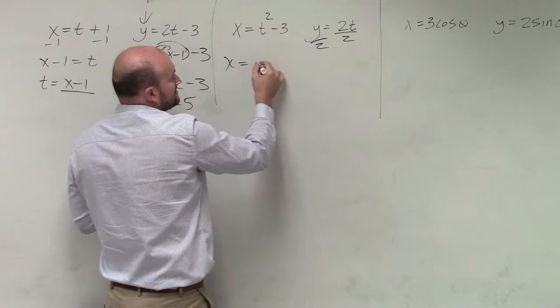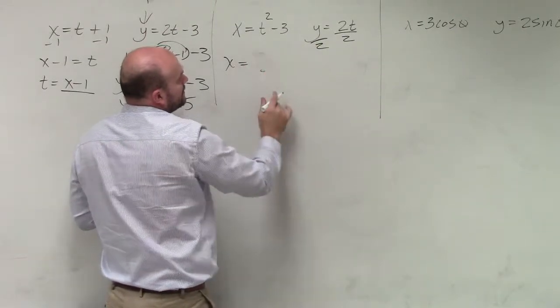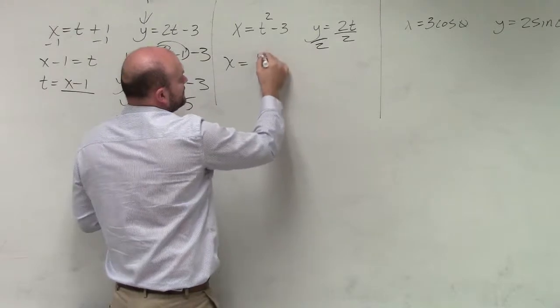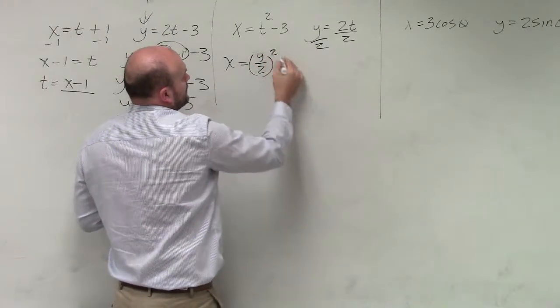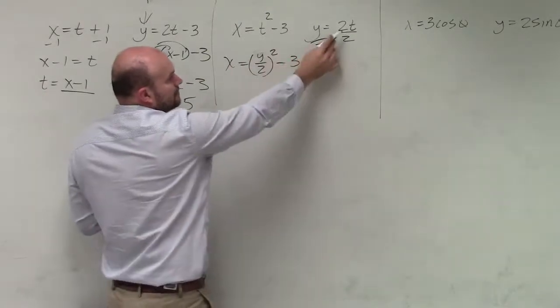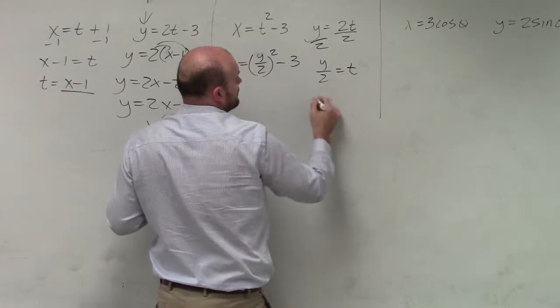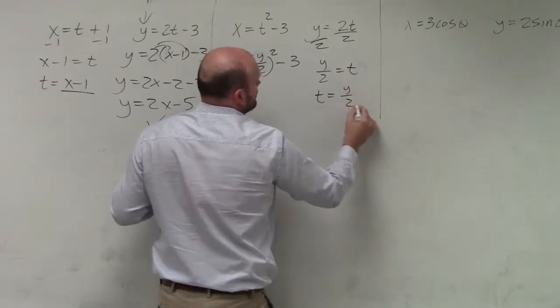So therefore, I have x equals y over t is y over 2. I had that right. Wait, are you going to have to erase x? No. It should be t, shouldn't it be? No. y over 2 is equal to t. Oh, okay, never mind. Okay.